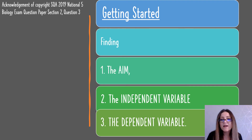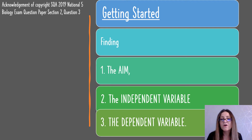The independent variable is the variable you are choosing to change - use the letter I to help you remember that. The dependent variable is the variable you measure and record for your results; it's the one being changed because of your independent variable. It can sound quite difficult to follow, but when you see it in a question it's a lot easier.